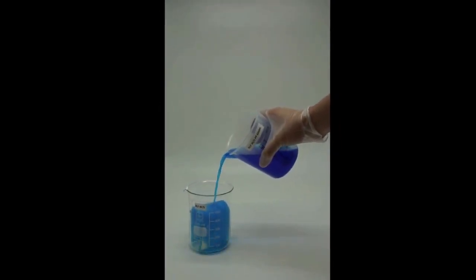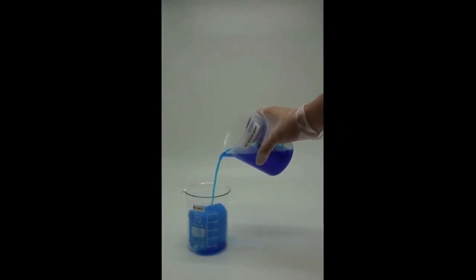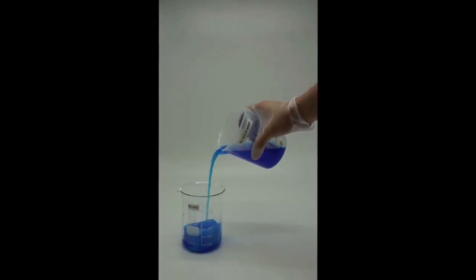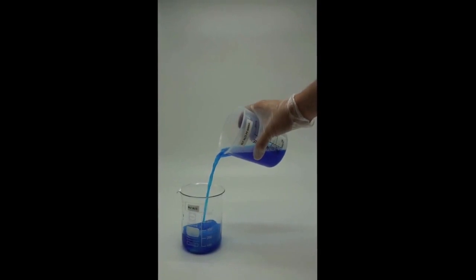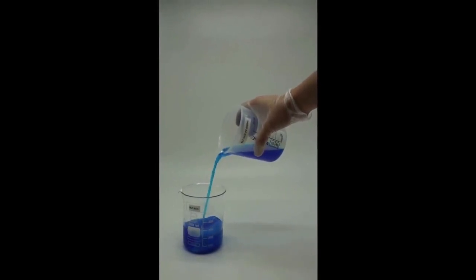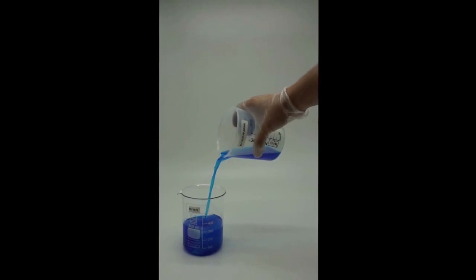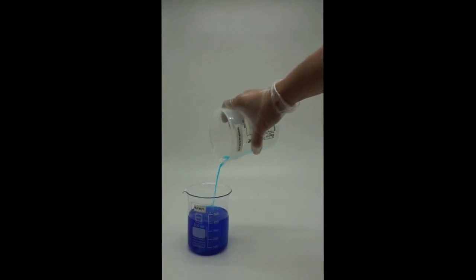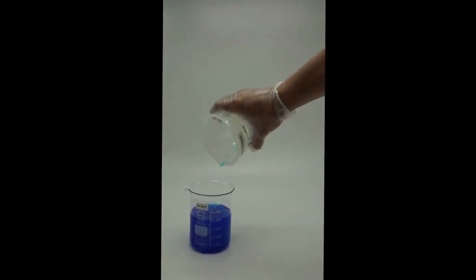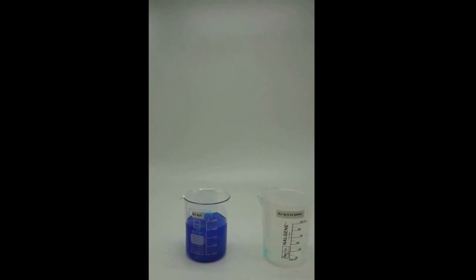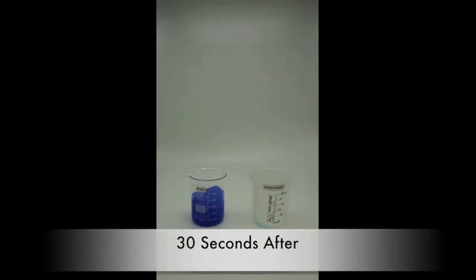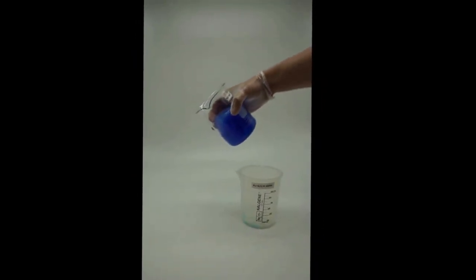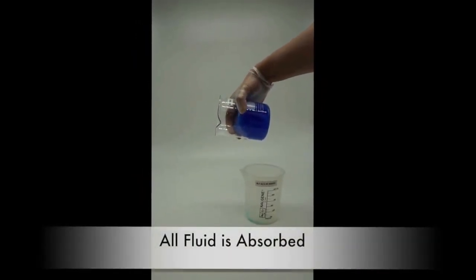400 cc's of fluid is poured directly onto the air laid core. After 30 seconds we can see all the 400 cc's of fluid has been absorbed into the core.